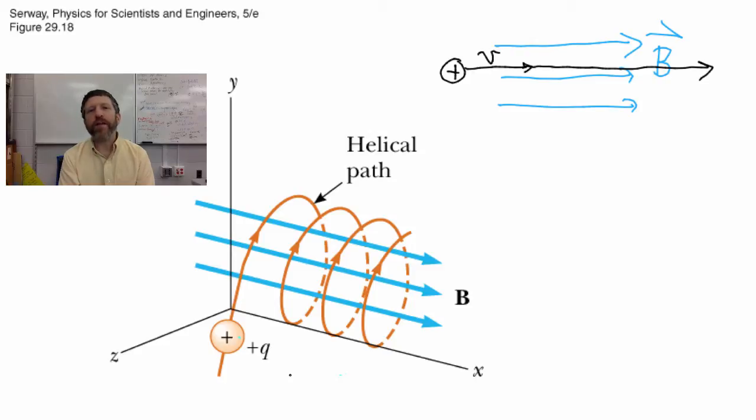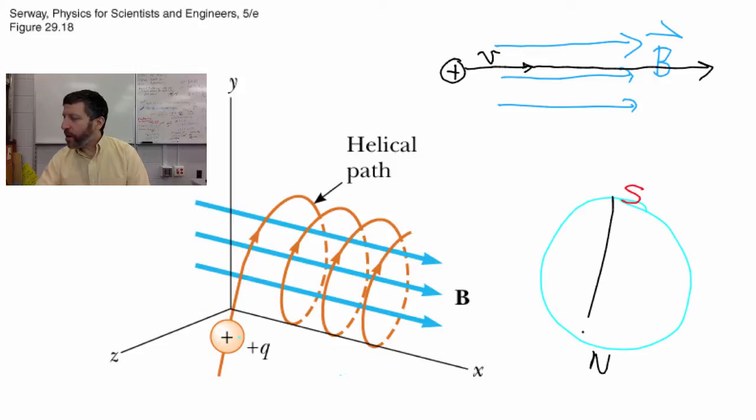And what does this have to do with the northern lights? Well particles are trapped by the Earth's magnetic field. Here's the Earth right here and of course up at the north end of the Earth, right by where Santa Claus lives, what magnetic pole is that? That's the south magnetic pole. And then you also have the north magnetic pole down there and it's just like a bar magnet.